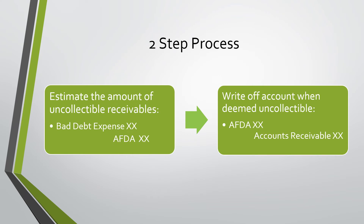This is a two-step process. First, we estimate the amount of uncollectable receivables with a Debit to Bad Debt Expense and a Credit to AFDA. And when it is confirmed, we then write off the account with a Debit to Allowance for Doubtful Accounts and a Credit to Accounts Receivable.